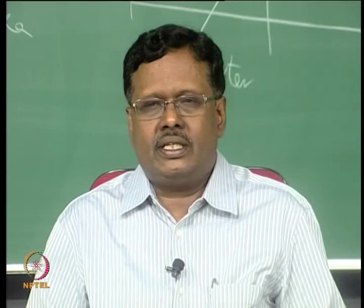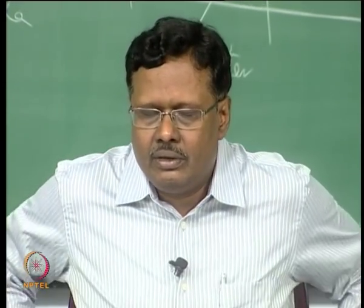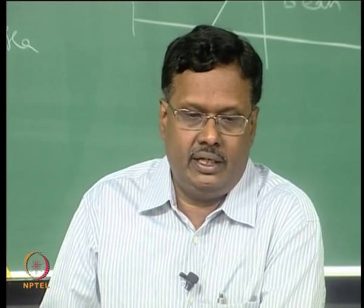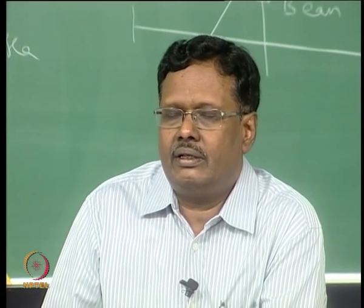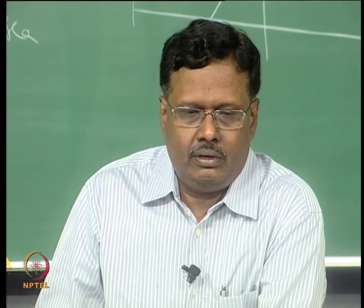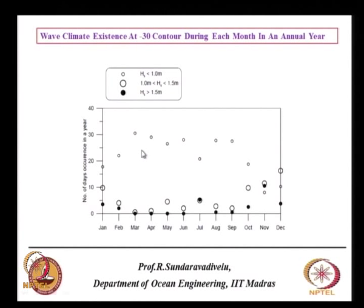This wave climate discussion is depth dependent — we must specify the water depth. Here it is the 30-meter contour. For each month of an annual year, the number of days of occurrence is given with three symbols: significant wave height less than 1 meter, between 1 to 1.5 meters, and greater than 1.5 meters. Greater than 1.5 meters is zero from March to June and August to September — below 1.5 meters is the typical threshold for operating a single wave mooring system. This is another way of representing wave climate at 30-meter water depth.